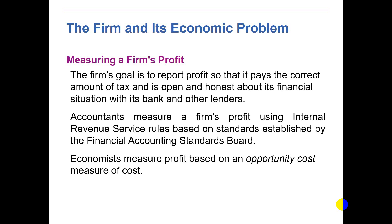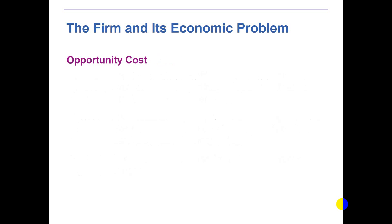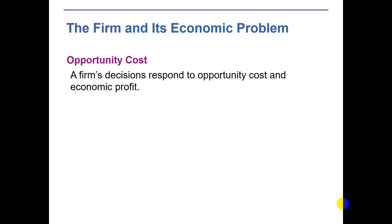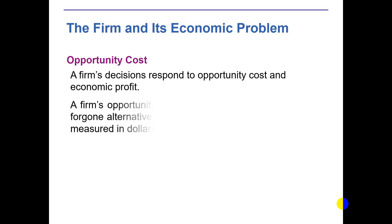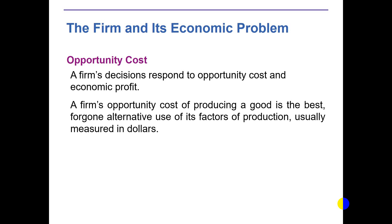In contrast, economists measure profit based on opportunity cost — the cost of the next best alternative foregone. The opportunity cost each firm faces is found in its decisions around economic profit. For example, it is quite possible that firms can outsource rather than manufacture a thing. So this is the opportunity cost: the firm needs to decide whether the cost of production is less or the cost of outsourcing is less. A firm's opportunity cost of producing a good is the best foregone alternative use, usually measured in dollars.